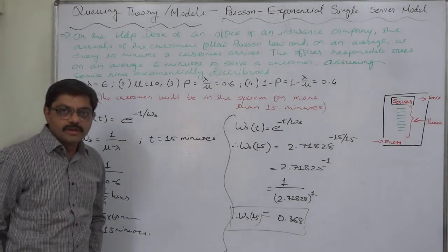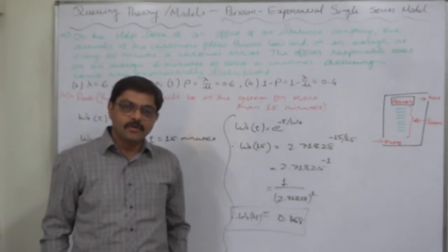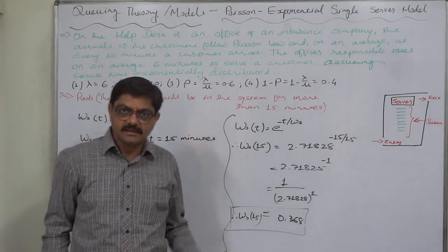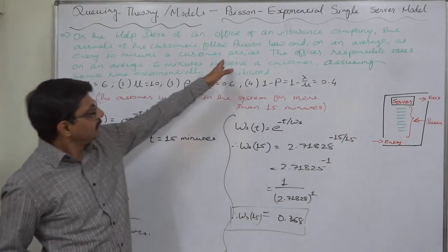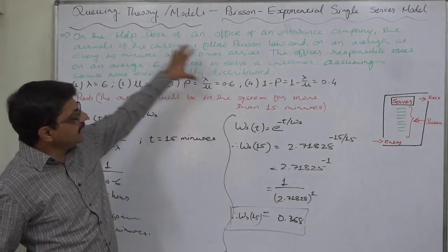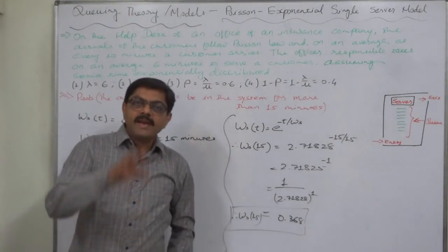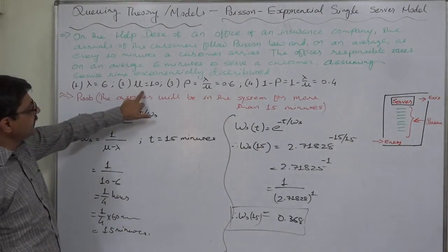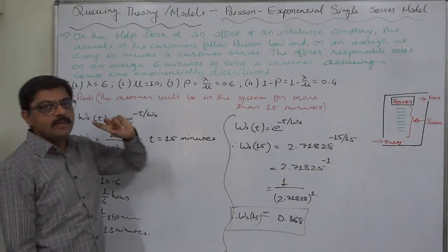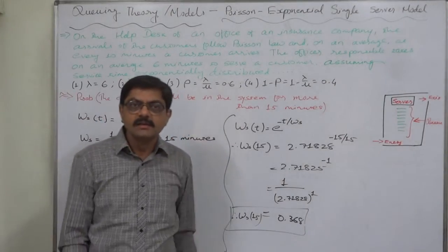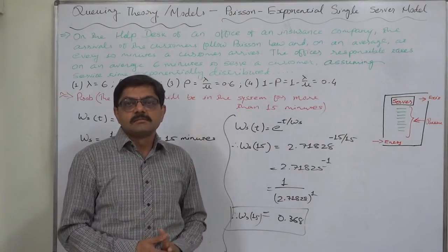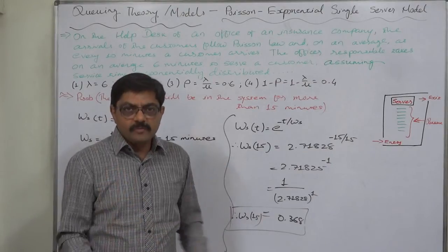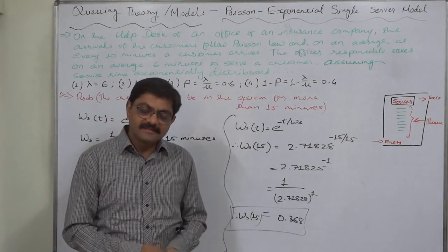In the chapter of queueing theory or queueing models, that's it for now. Now we are going to discuss another case and calculations of various things in a new case. The main focus will be how to understand the arrival rate and service rate from any question. Rather, any case is elaborated or explained with different kinds of information or different kinds of presentations. That's it, thank you very much.